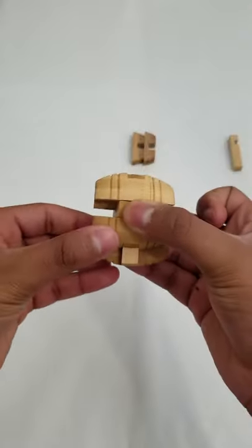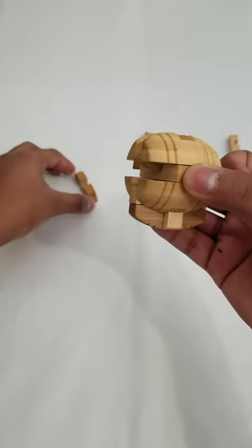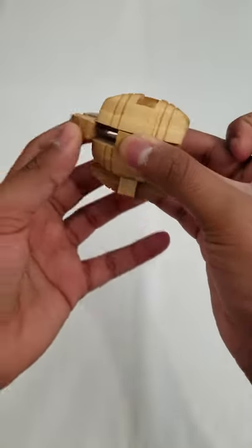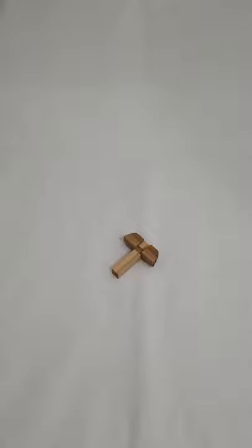Now slide in one of the D pieces from the left and pull the middle piece back up. Now you will have one D piece and a key piece.